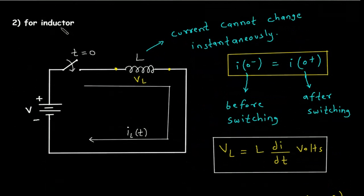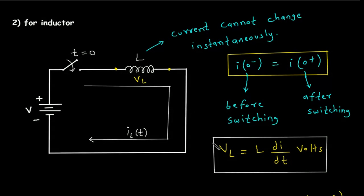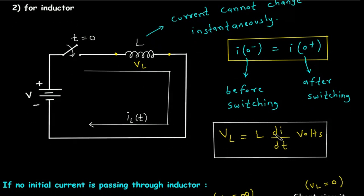In the case of an inductor, current cannot change instantaneously. Therefore, I(0⁻) = I(0⁺) — the current before switching equals the current after switching. Let VL be the voltage across the inductor. Then VL = L·di/dt, where di/dt represents the change in current with respect to time.